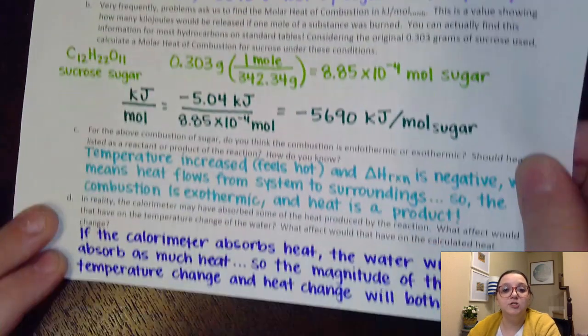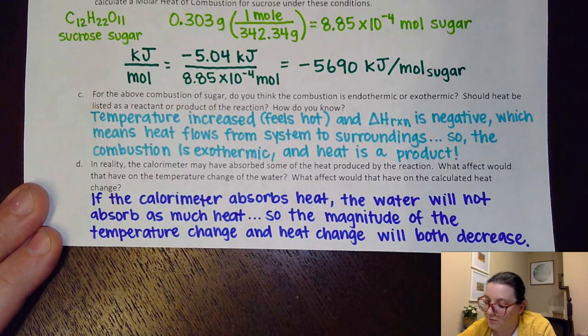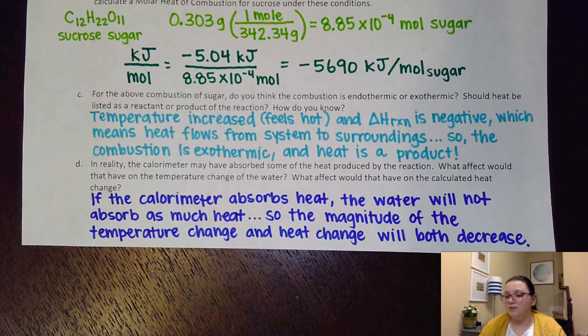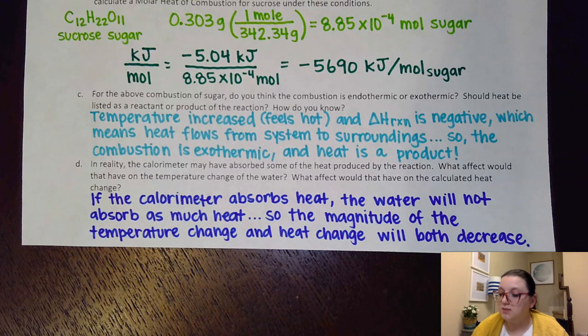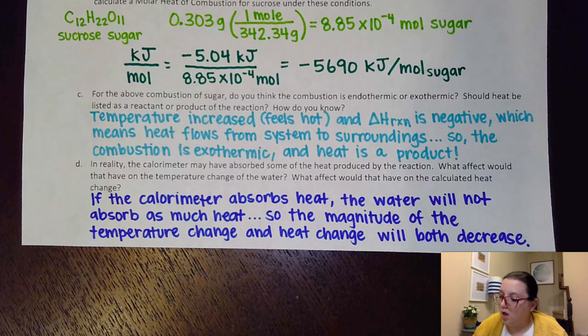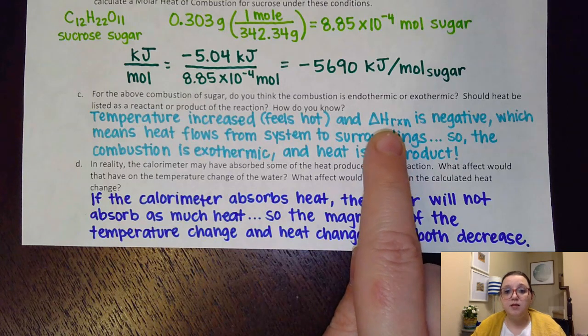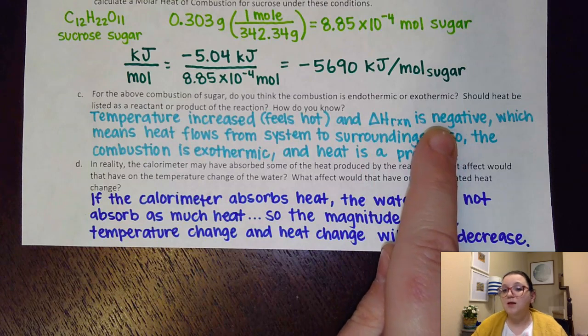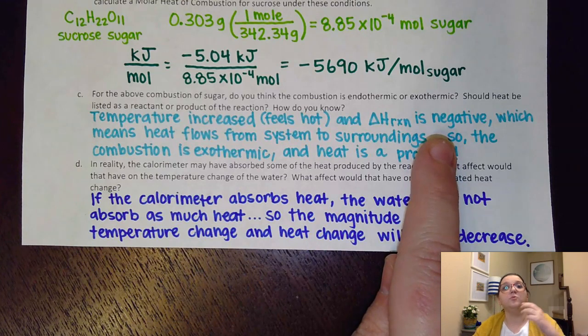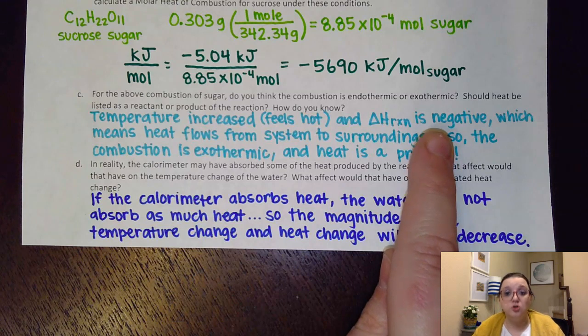Now, it asks us some additional questions down here. It says, for the above reaction of sugar, do you think the combustion is endothermic or exothermic? Should heat be listed as a reactant or product of the reaction? Now, I'll be honest. There's several ways to know here that this process was exothermic. First off, you notice that the temperature increased for the surroundings for the water. And that means it would feel hot to the touch. And so, that would indicate it's exothermic. Also, when I really thought through everything, the delta H of the reaction did come out to be negative. Now, I know you really had to decide that. But hopefully, we see how that worked. That, you know, the water gained because the reaction lost. And so, that delta H should have been negative.